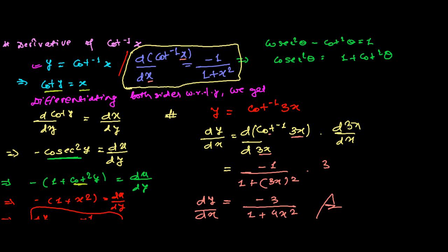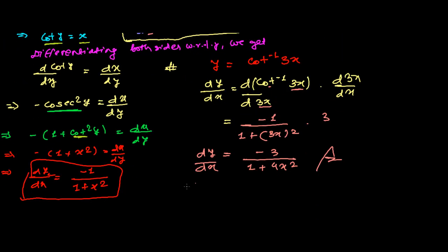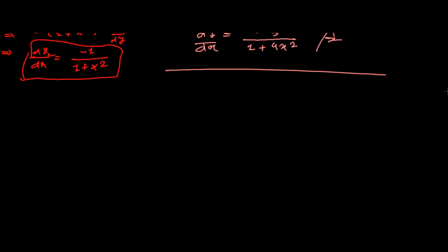You can use the direct formula as a shortcut. Now let's try another, slightly more complex cot inverse function. Suppose y = 9·cot inverse(3x³ + 2x + 1). It may look complex, but it is not as difficult as it seems.